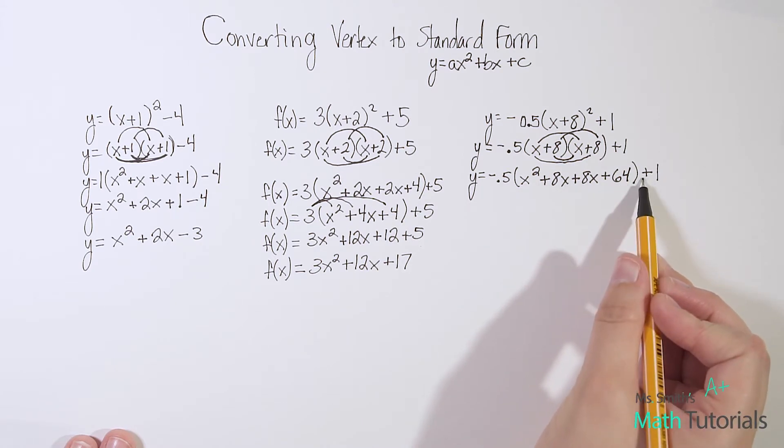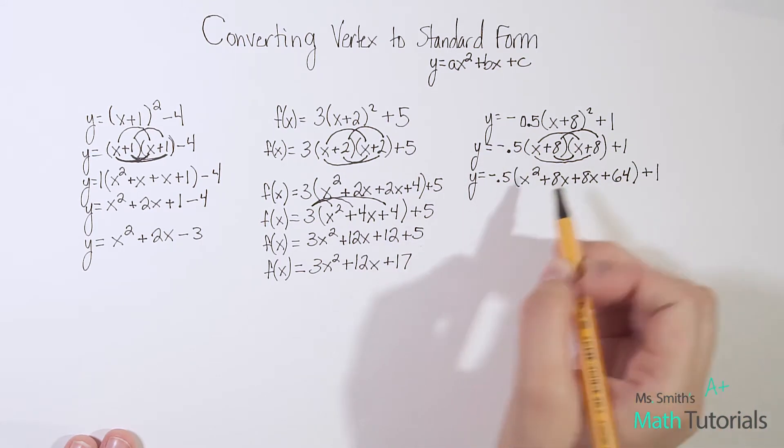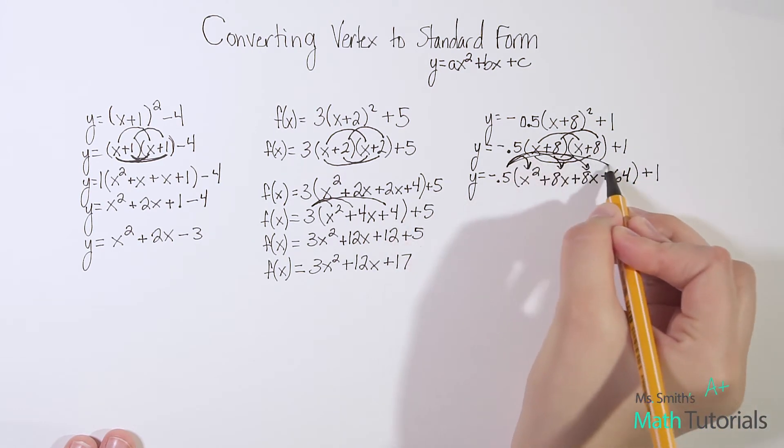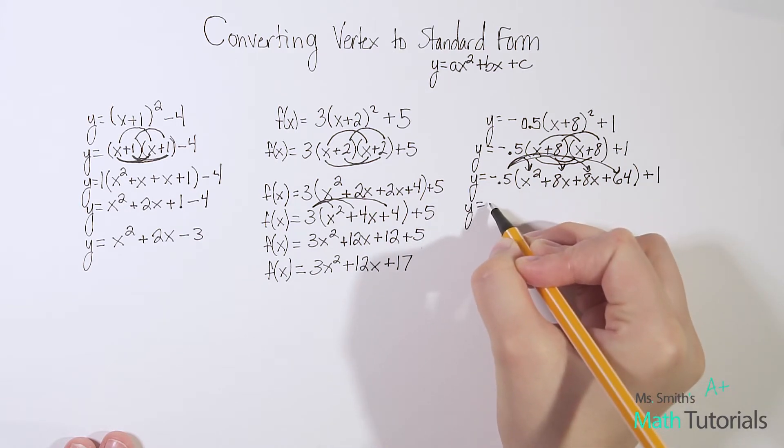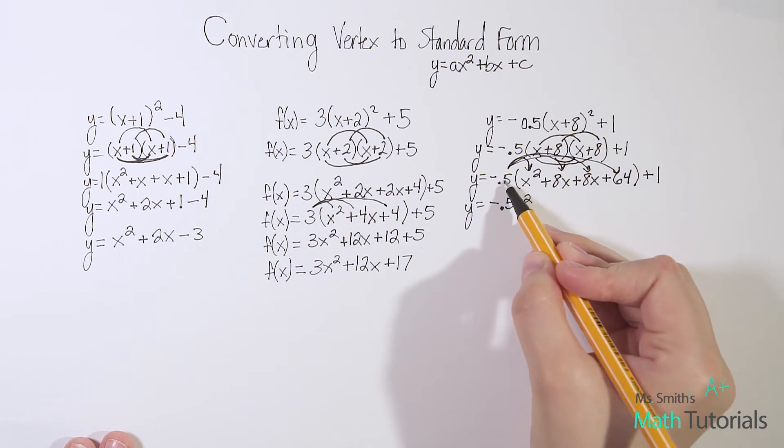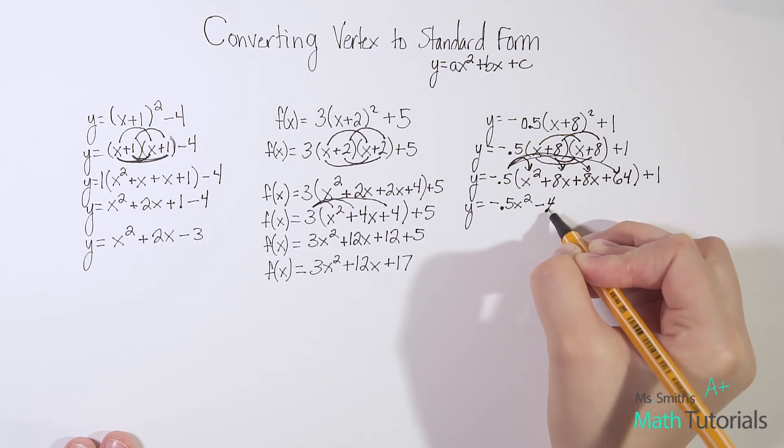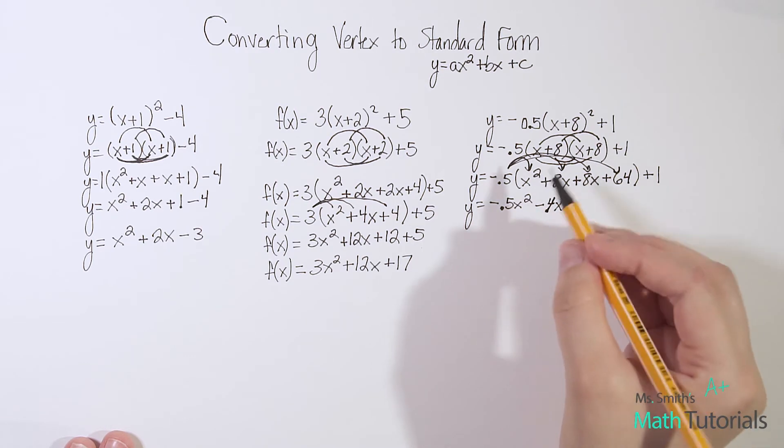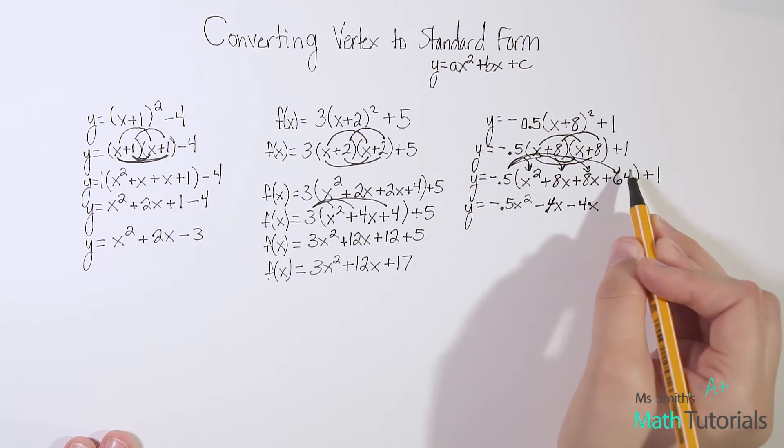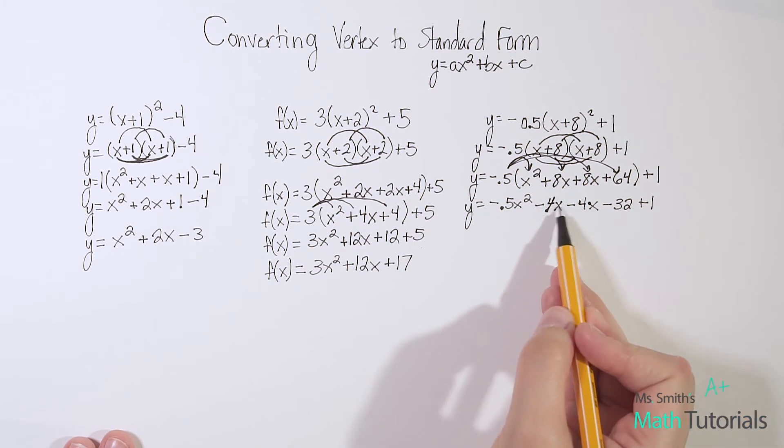My next step, I don't want to just add 64 + 1. I'm not ready for that yet. I've got this parentheses wall there that I've got to get rid of. I need to distribute this -0.5 in first. We're going to distribute that to each part. So now we've got y = -0.5 times x² is -0.5x². -0.5 times 8x is -4x. And then -0.5 times 8x, we'd get -4x. And then -0.5 times 64, that's going to give me -32 + 1.